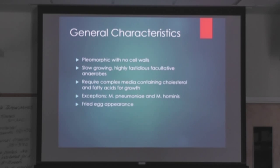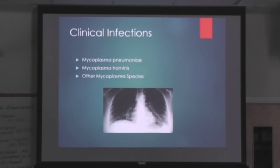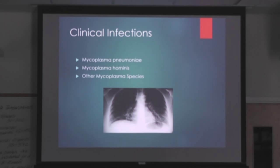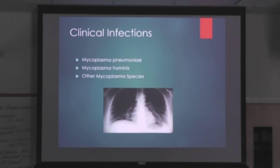For clinical infections, the two we're talking about are M. pneumoniae and M. hominis. For M. pneumoniae — walking pneumonia, also called primary atypical pneumonia — it differs from Streptococcus pneumoniae in that the infection is much milder, there's a higher incidence in young adults, and it's also not seasonal, unlike Streptococcus pneumoniae.